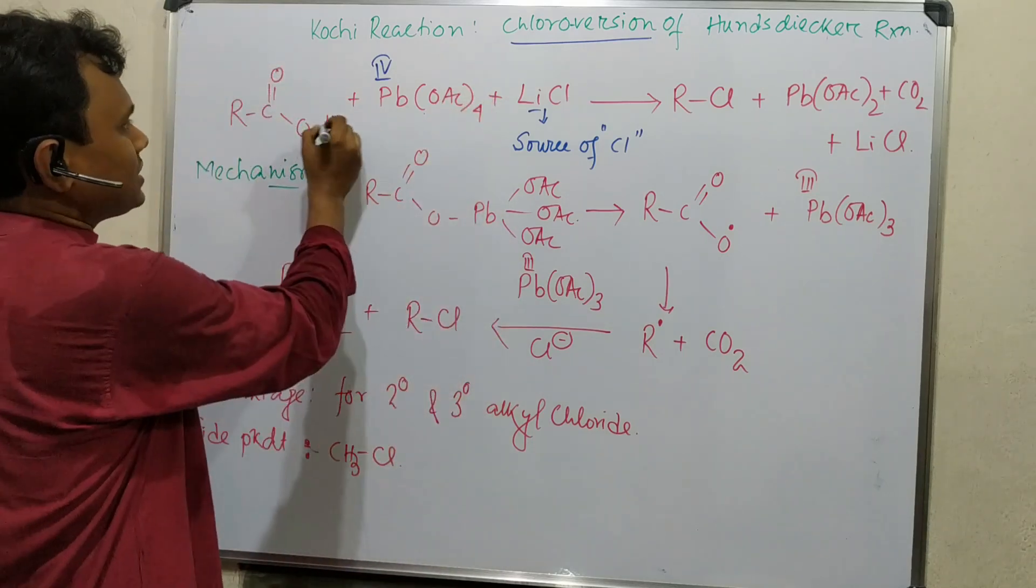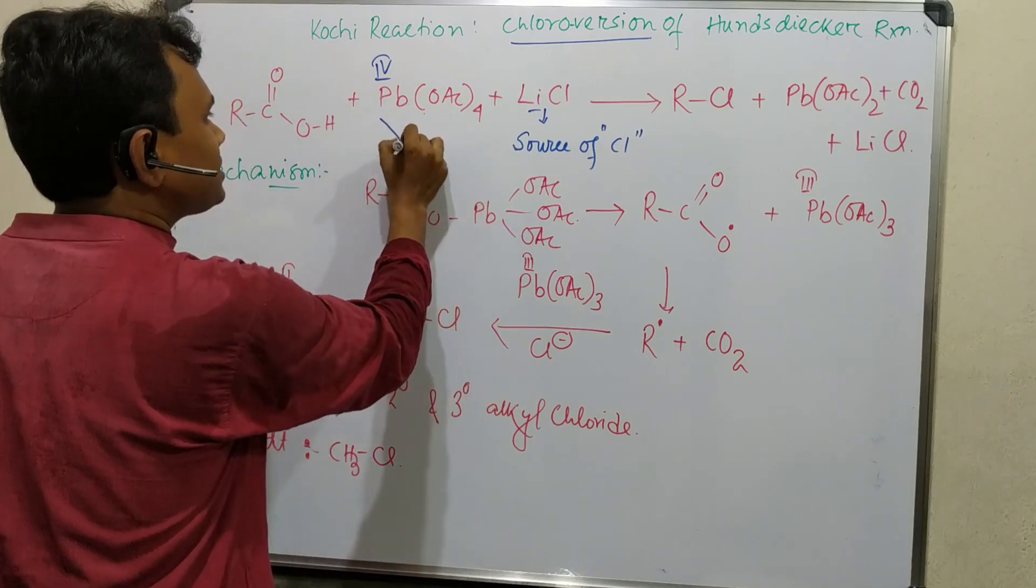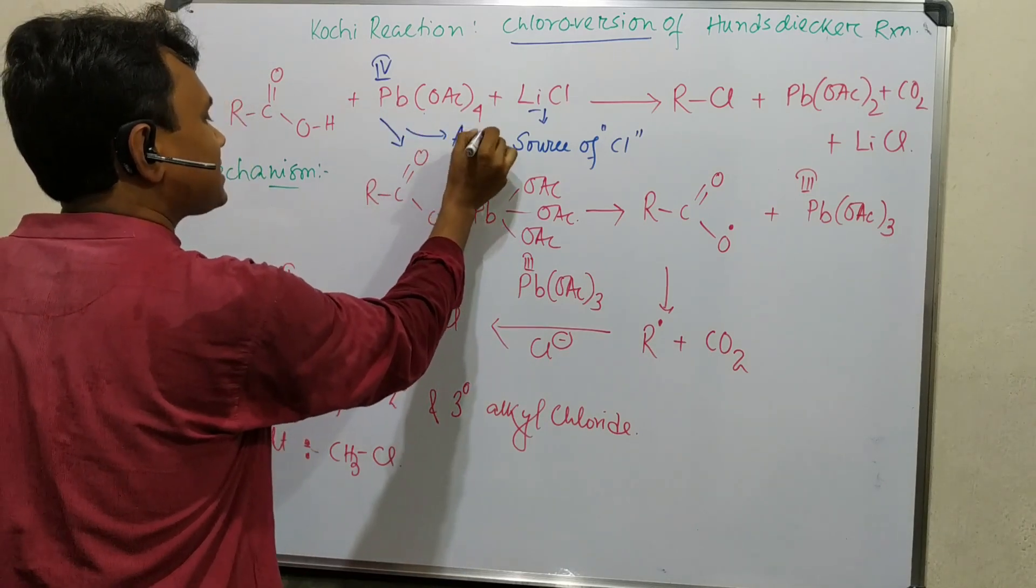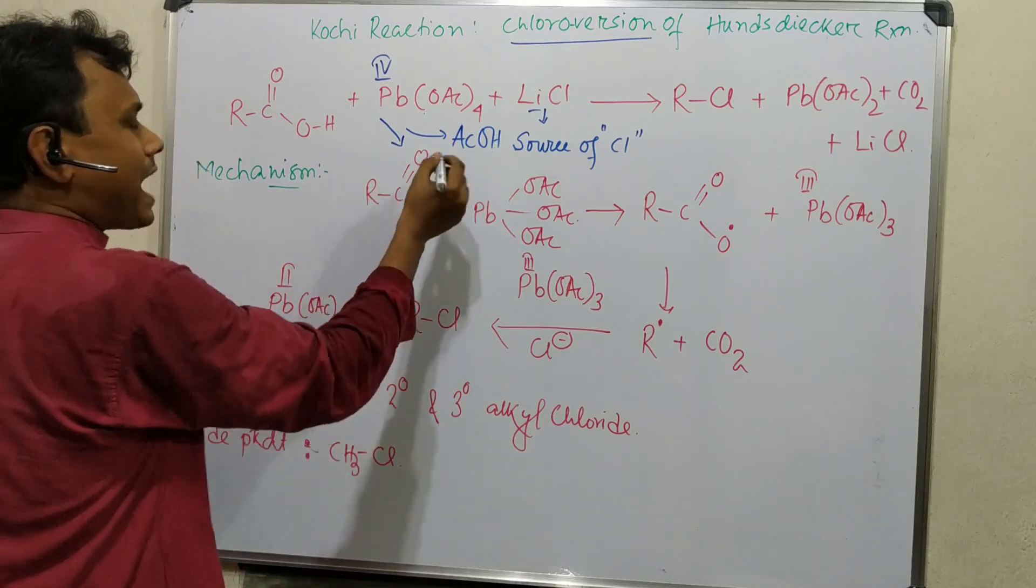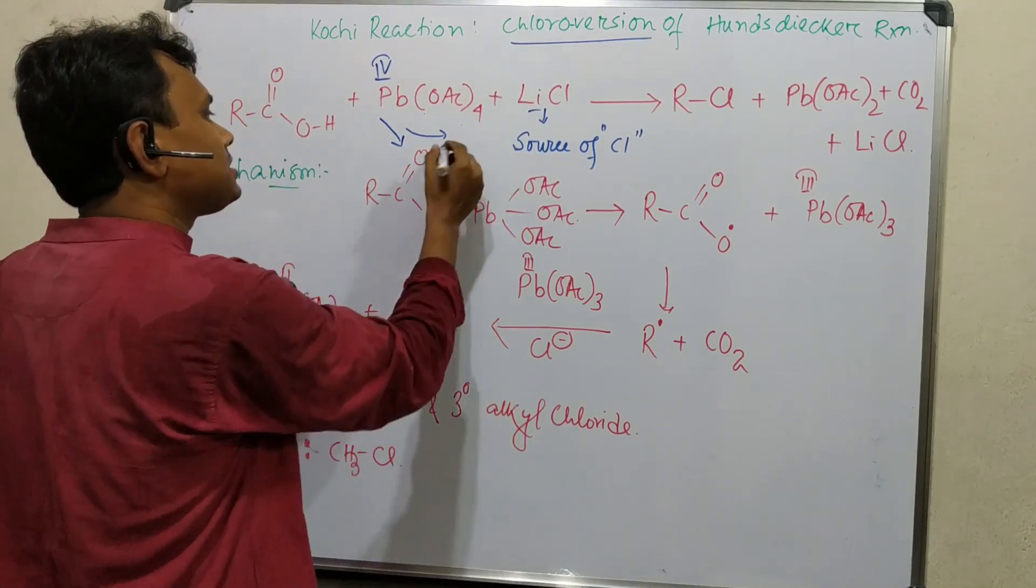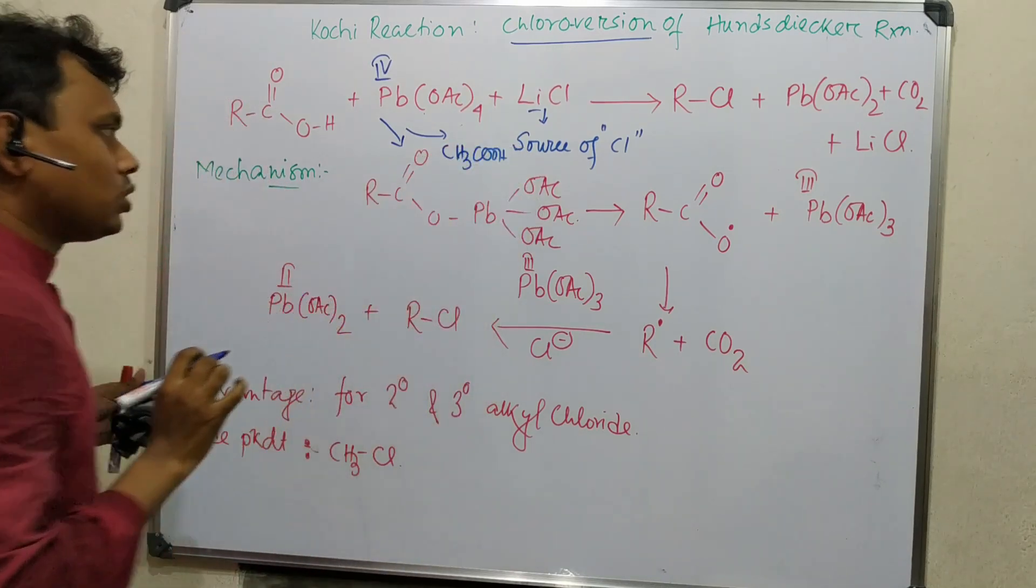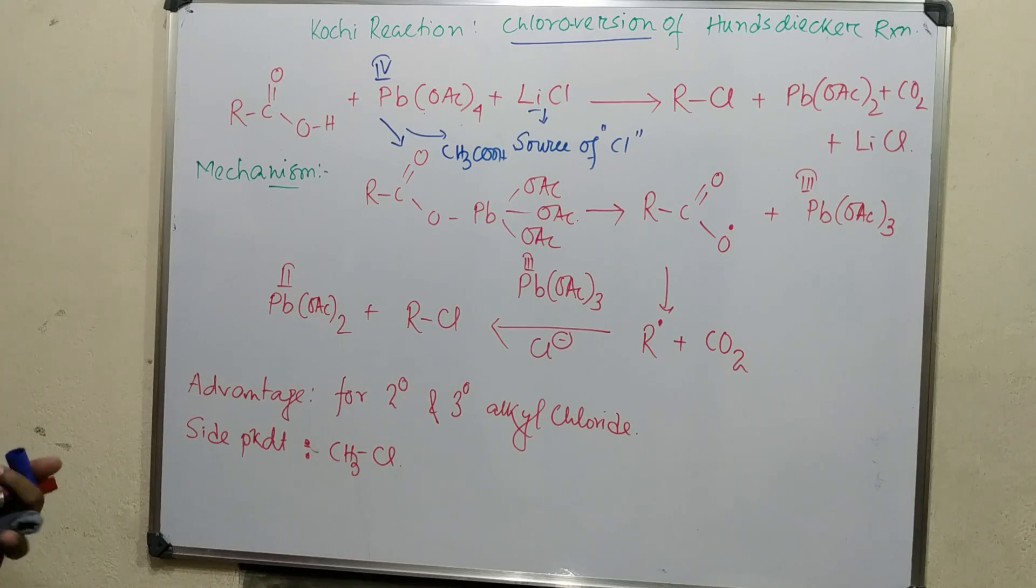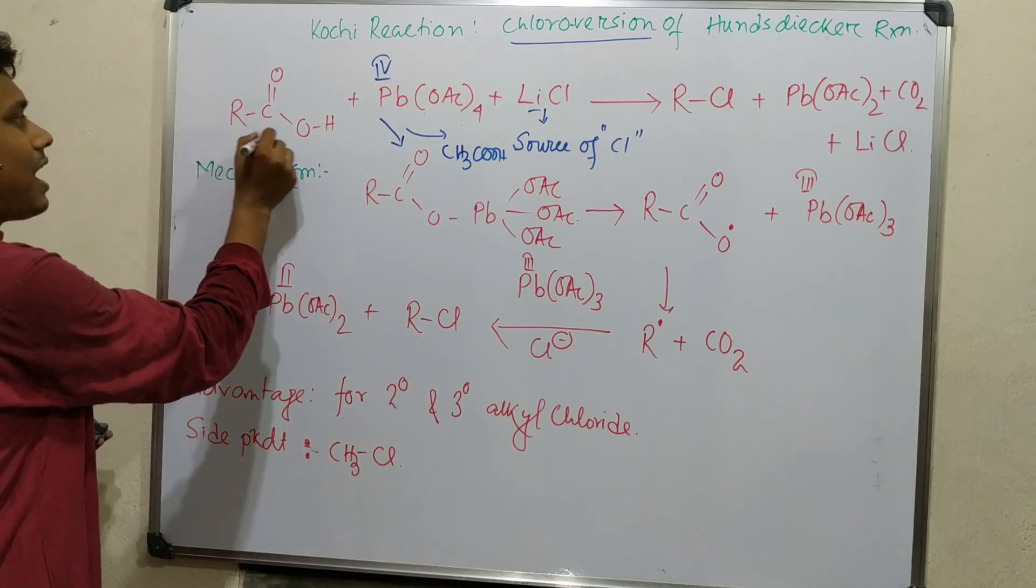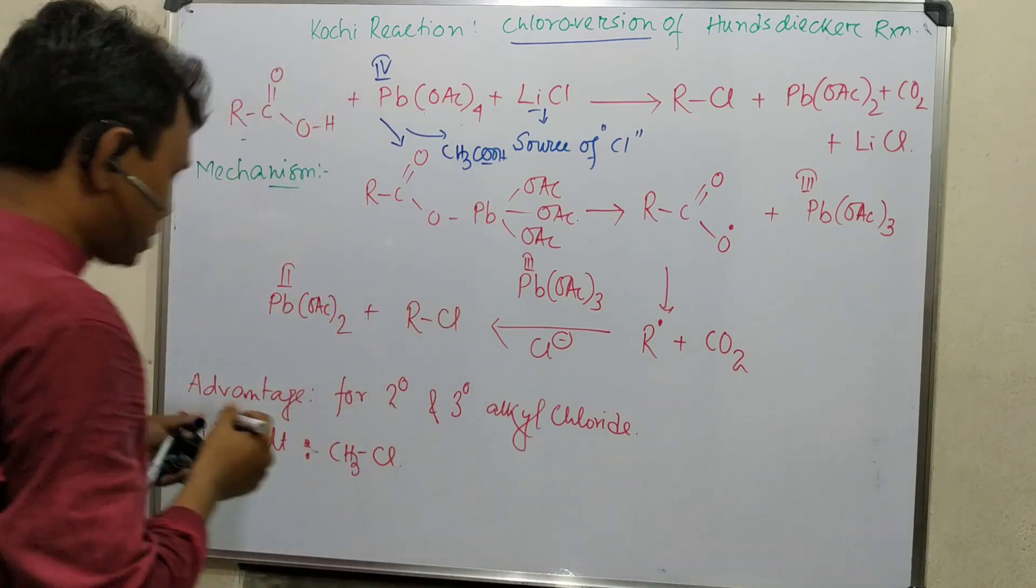First, these two react and eliminate one, producing acetic acid. If we write the structure of acetic acid, that is CH3COOH. Right now in medium, two types of carboxylic acid are there: one is RCOOH and another is acetic acid. In this way, the reaction happens.